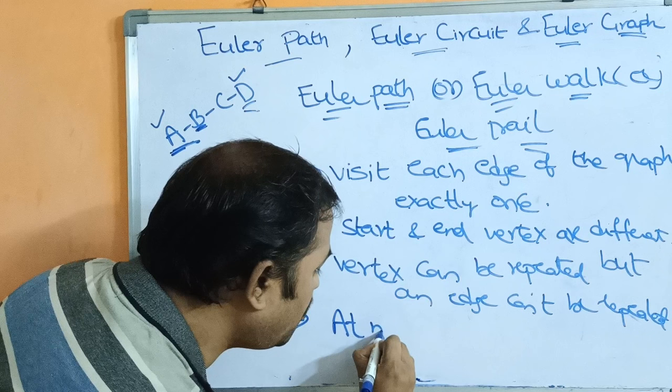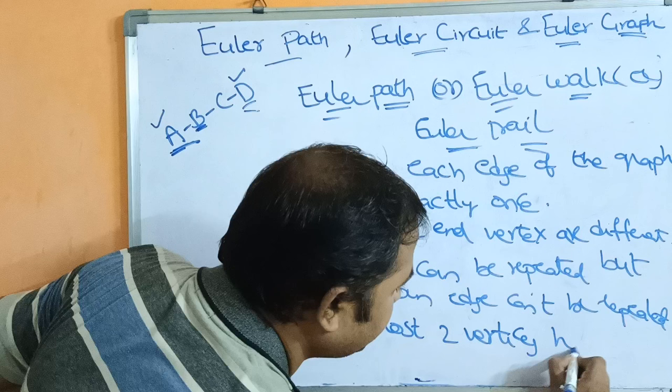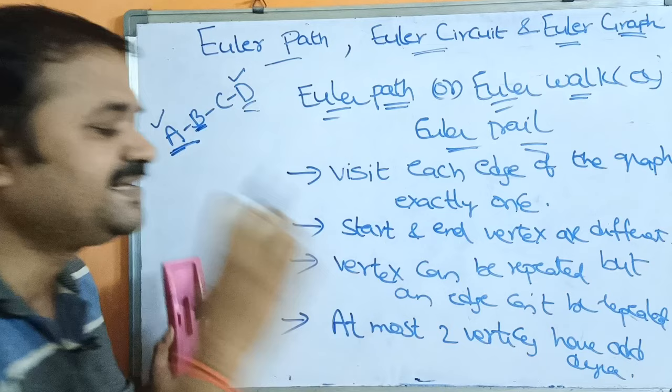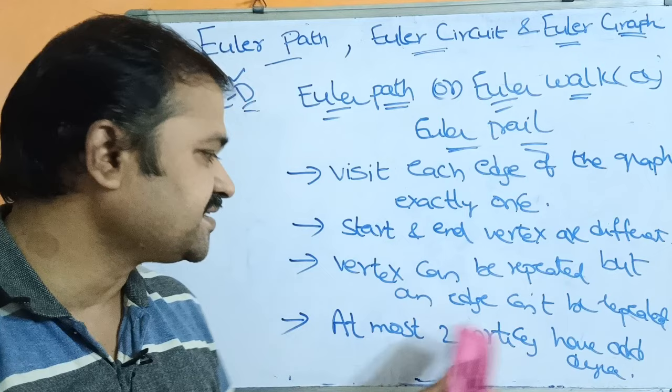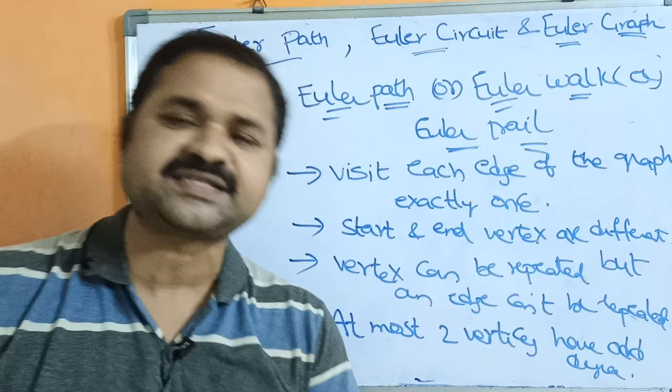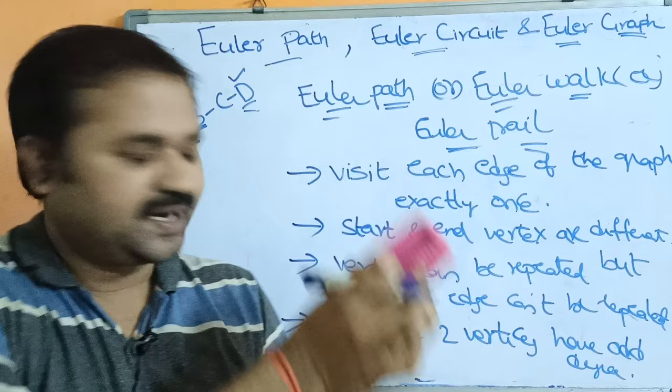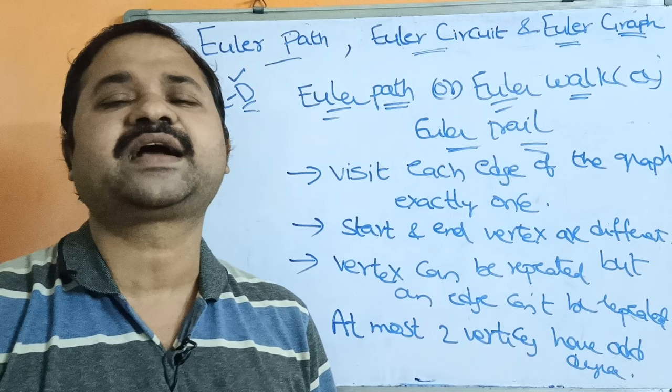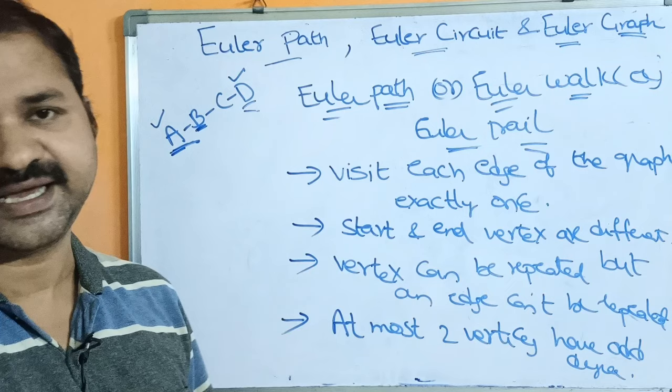One important point: a graph will contain Euler path if at most two vertices have odd degree. If at most two vertices have odd degree, then we can say that the graph contains Euler path. At most means maximum two vertices can have odd degree — that means two, one, or zero vertices.